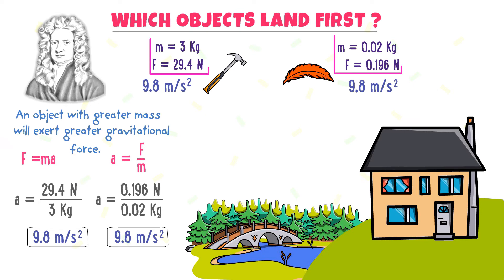So, the ratio of force and mass remains constant for gravitational acceleration. It means that both the hammer and the feather will fall down towards the earth with the same acceleration and would land at the same time.